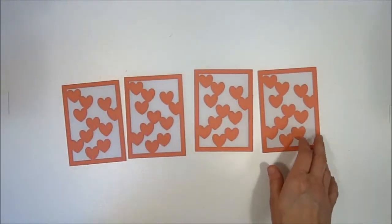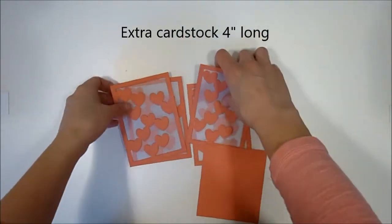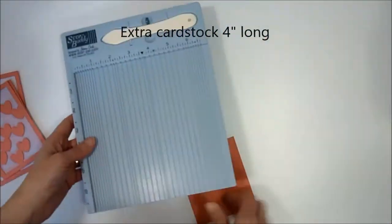Now with all four of those done, I skipped ahead a little bit. That extra little piece of cardstock from that eight and a half by eleven, I've trimmed it to four inches high, and I'm going to use it on a scoring board.